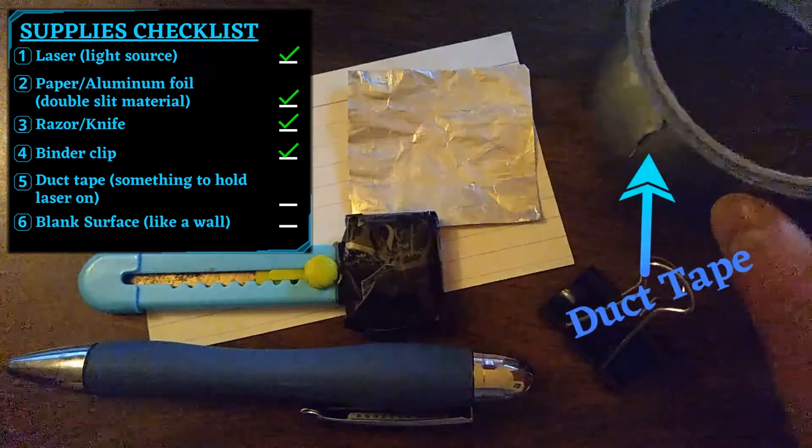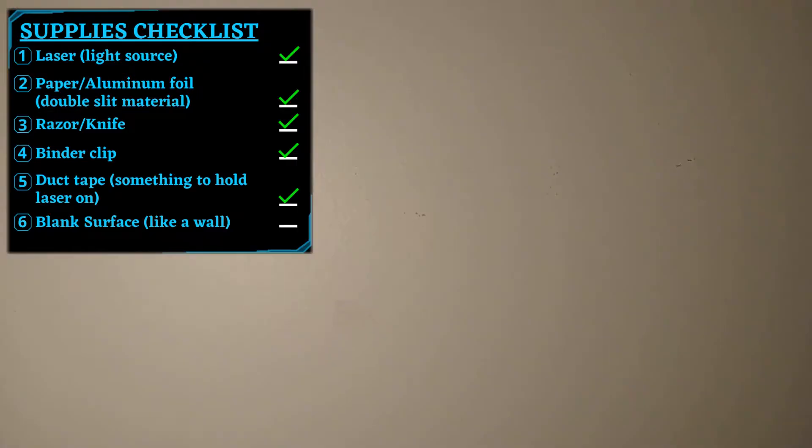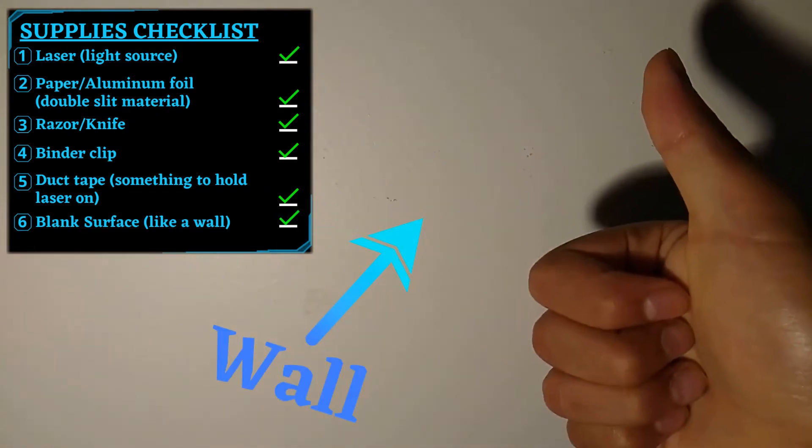Fifth, duct tape or some contraption to keep the laser on. Lastly, a blank surface for you to enjoy a nice clear interference pattern.